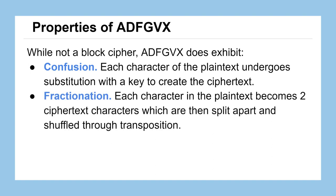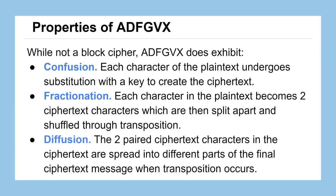It introduces something new, which is called fractionation. Each character of our plaintext will become two characters in the ciphertext, and then those two characters are going to be split apart from each other and moved around in the ciphertext through a process called transposition — similar to the railfence cipher from earlier in the course. There is going to be some diffusion: those two paired ciphertext characters will get spread out through different parts of the message, so that one change in our plaintext character will cause two characters to change in the ciphertext in slightly different places.